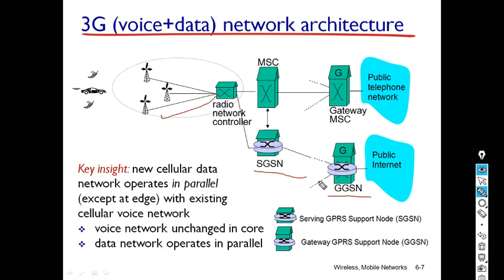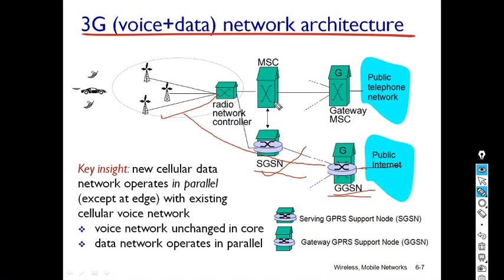The SGSN routes datagrams to the GGSN, which is the gateway — the last component the datagram sent by the mobile node encounters before entering the public internet. In addition, the SGSN contacts the MSC of that area to obtain mobile location information, mobility accounting, and authorization.